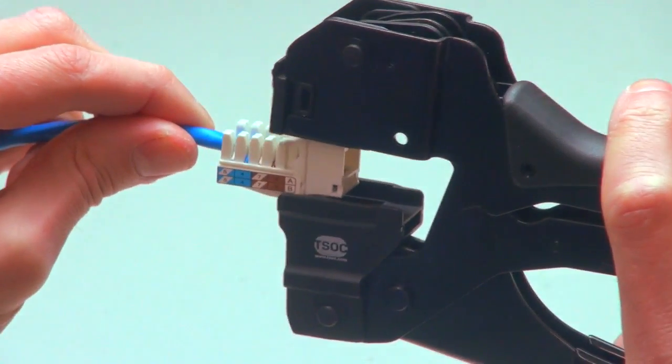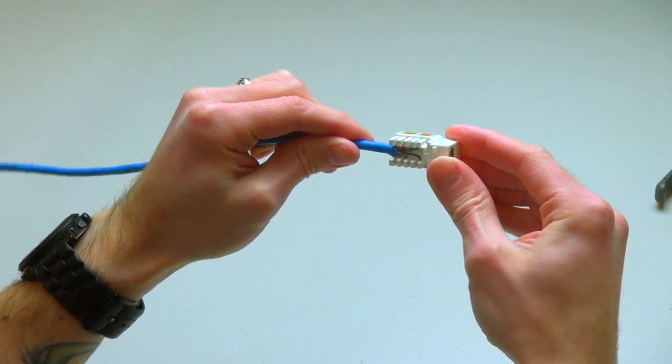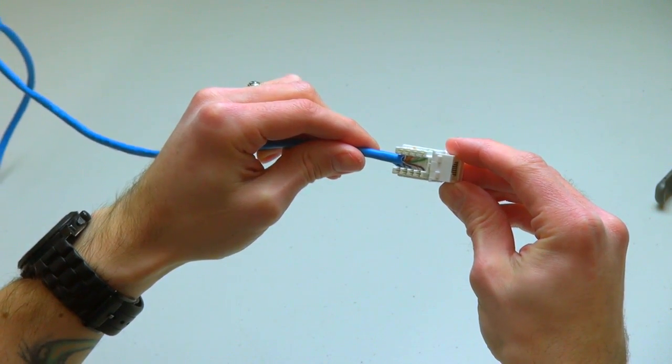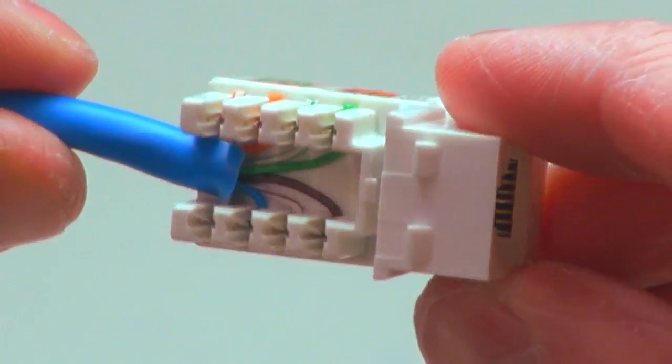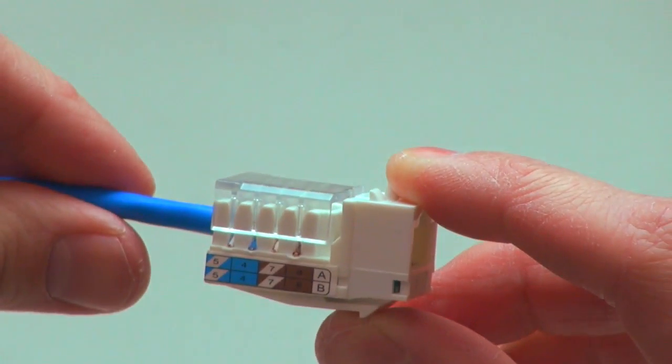Step 5: Inspect that all insulated conductors are terminated to the IDC or insulated displacement connectors of the Keystone module. Remember to secure the protective cap when complete.